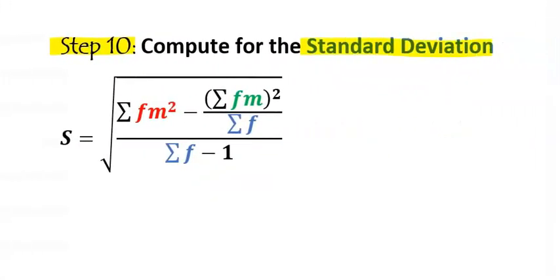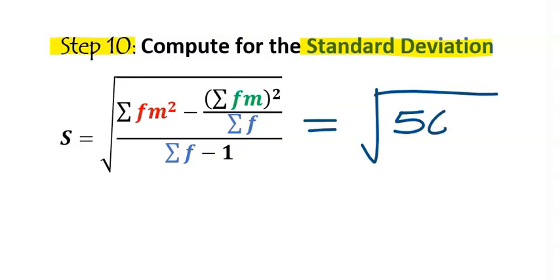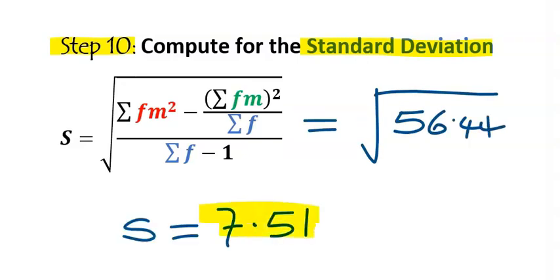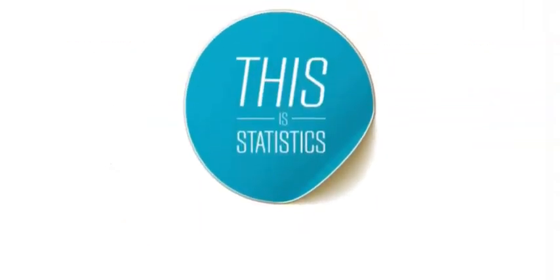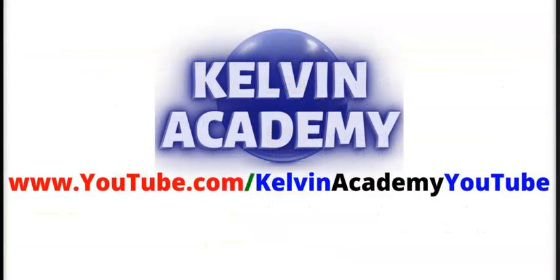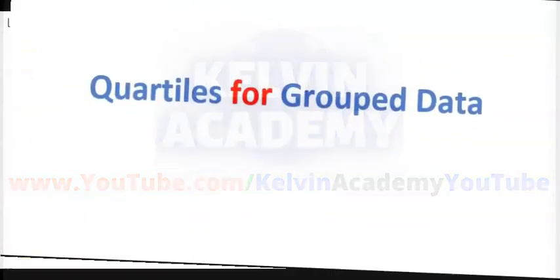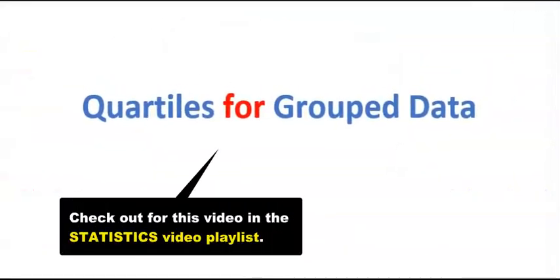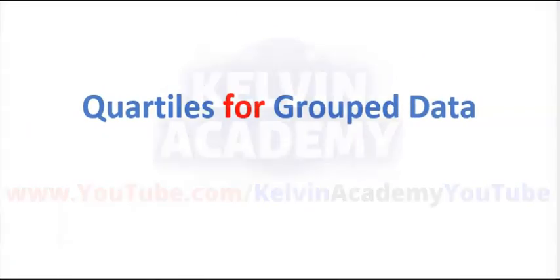Step ten: compute the standard deviation. The standard deviation is simply the square root of the variance. The square root of 56.44 gives a standard deviation of 7.51. This is statistics — try the assignment and follow the link on screen for other videos. The next topic is partials for grouped data.